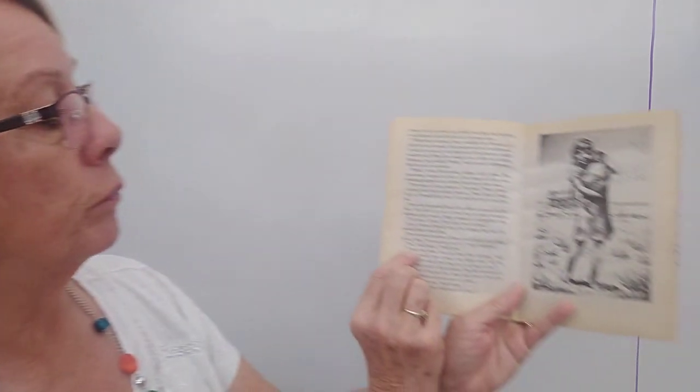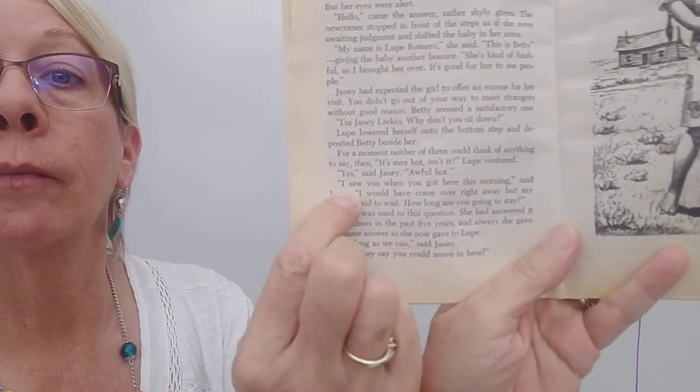On page four, I'm going to start reading right here. Ready, set, go. So, I saw you when you got here this morning, said Lupe. I would have come over right away, but my mother said to wait. How long are you going to stay? Janie was used to this question. She had answered it many times in the last five years, and always she gave the same answer as she gave now. As long as we can, said Janie.